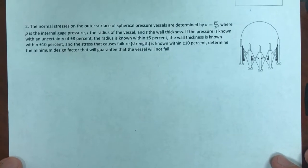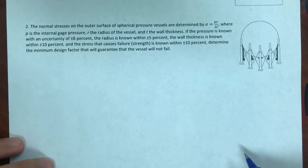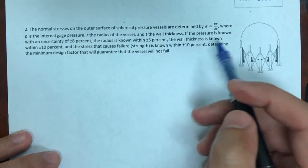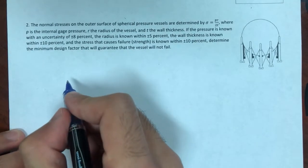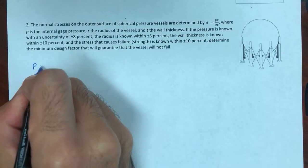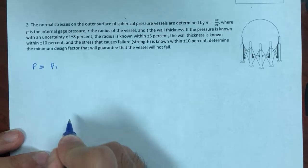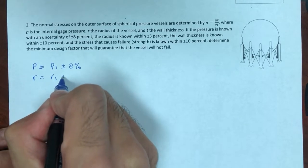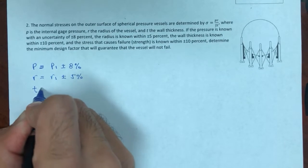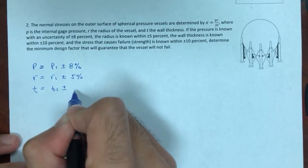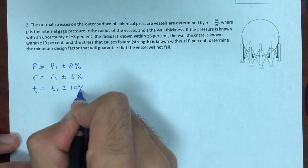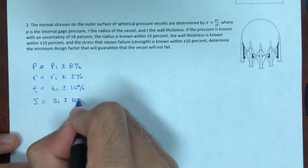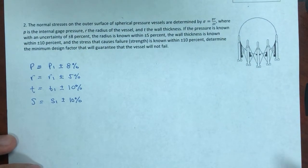Problem 2. The normal stress on the outer surface of a spherical pressure vessel is given by sigma = P R over 2T, where P is the internal gauge pressure, R is the radius, and T is the wall thickness. The pressure is known with an uncertainty of ±8%, the radius with ±5%, the wall thickness with ±10%, and the strength is known within ±10%. Determine the minimum design factor that guarantees the vessel will not fail.